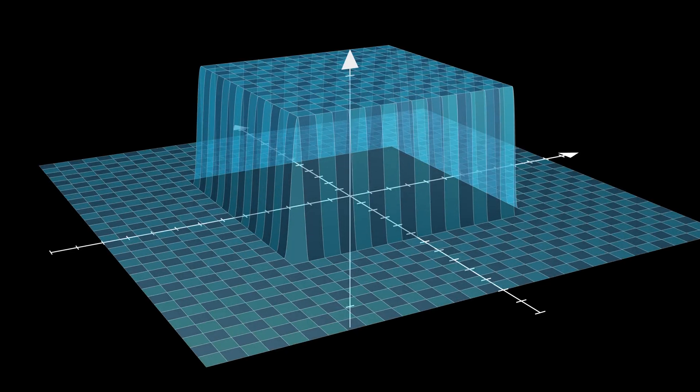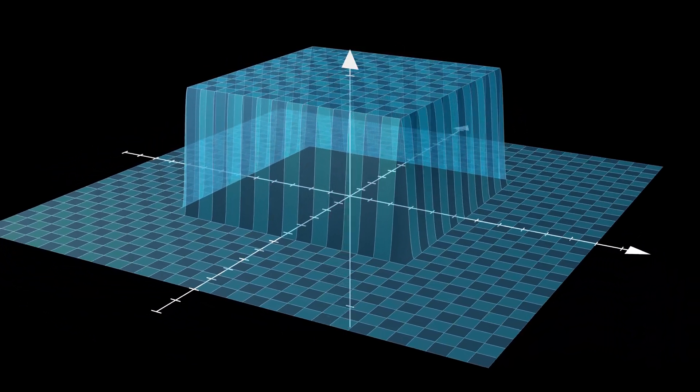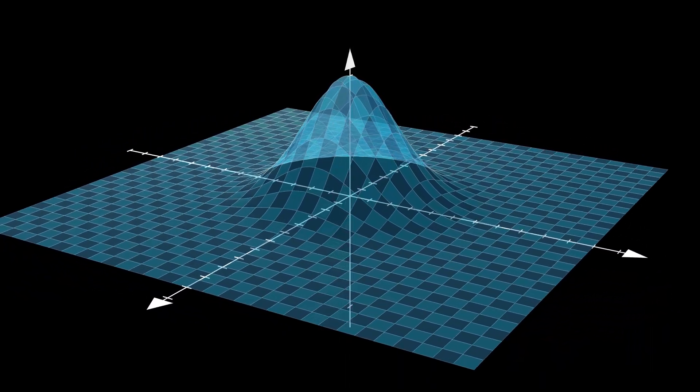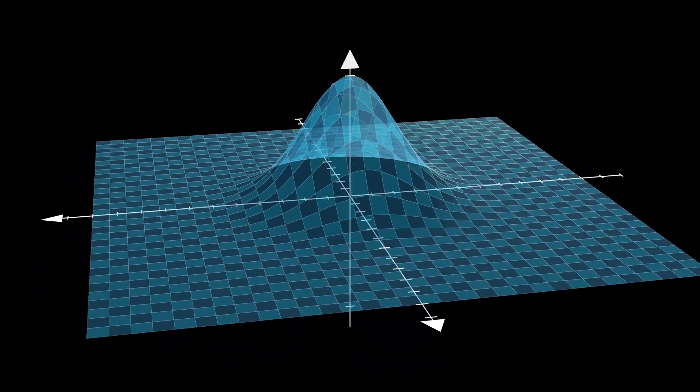How do we fix this? Well, the box filter treats all the pixels in the neighborhood equally. But what if we give more weight to pixels closer to the center? That could create a smoother natural blur.